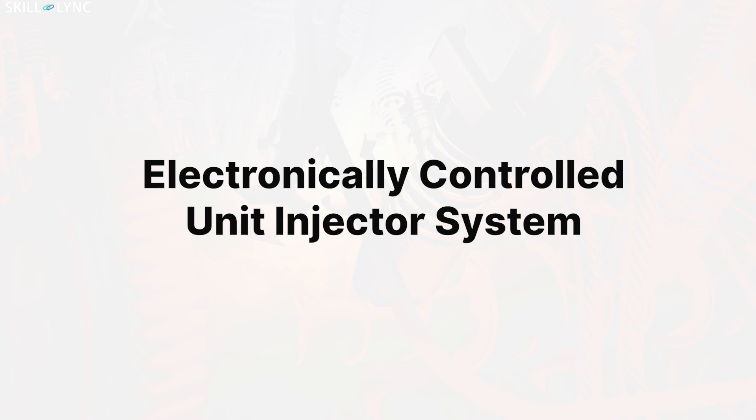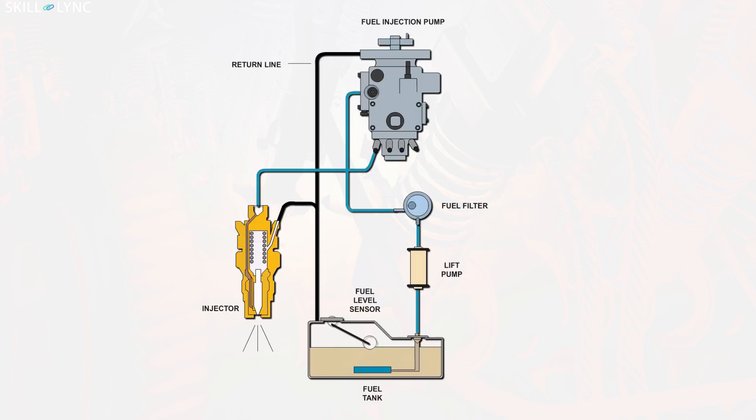In this video we'll be discussing one such injection system called the electronically controlled unit injector system. In conventional systems, the fuel is taken from the fuel tank by the lift pump and further pressurized and metered in the injection pump.